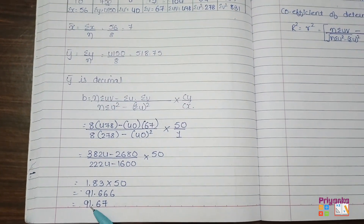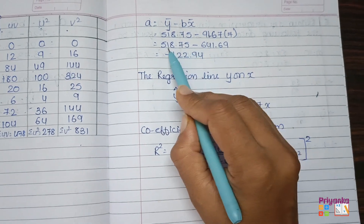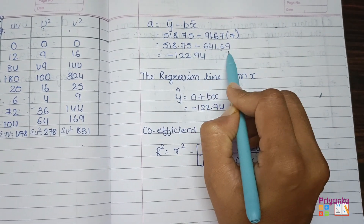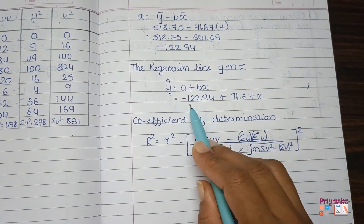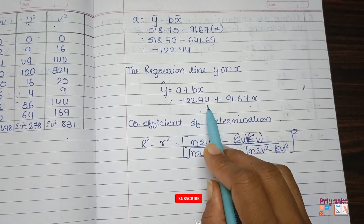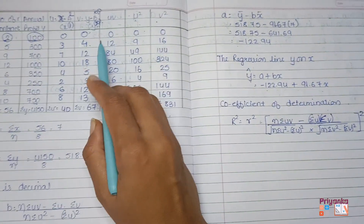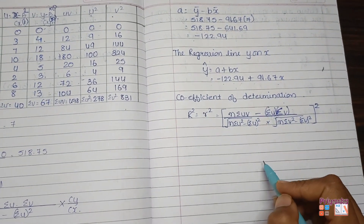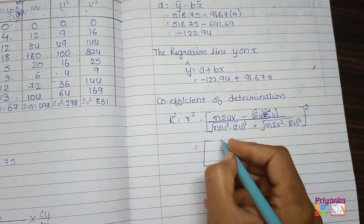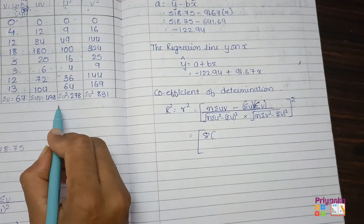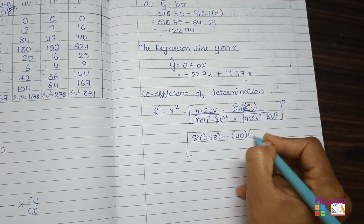Here we found b as 91.67. Next, we found a as approximately 518.75 minus a larger value, so the answer came out negative. The regression line is: Y-cap = −122.94 + 91.67X. Next is to find the coefficient of determination. Using the UV formula, keep all the information: N = 8, sigma UV = 478, sigma U = 40, sigma V = 67.